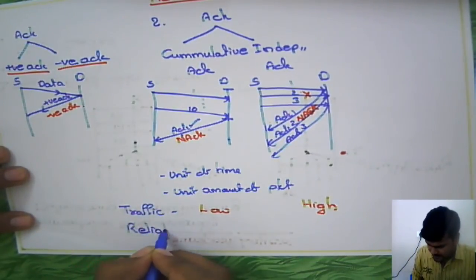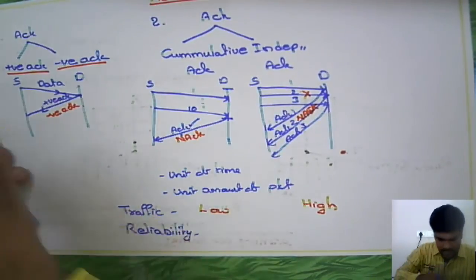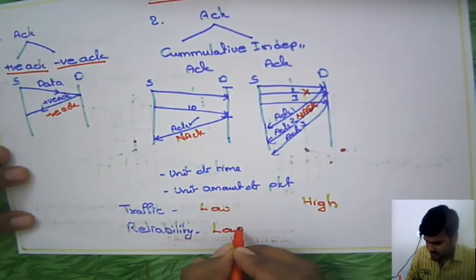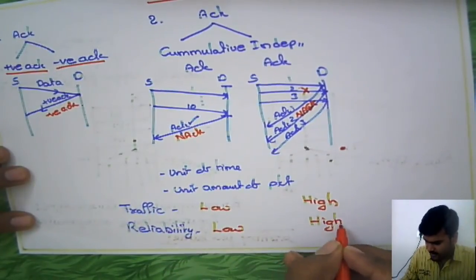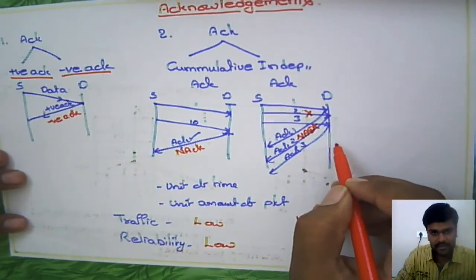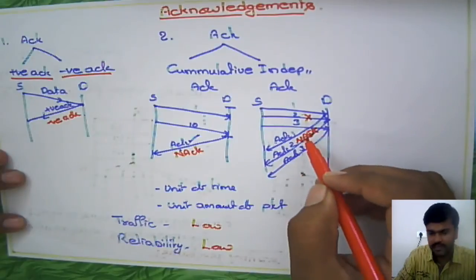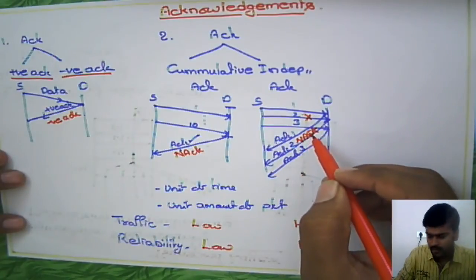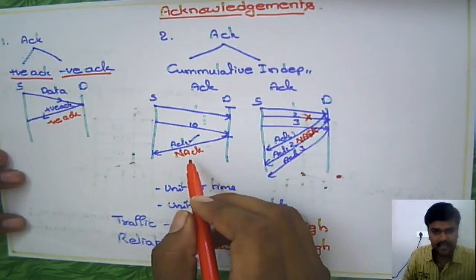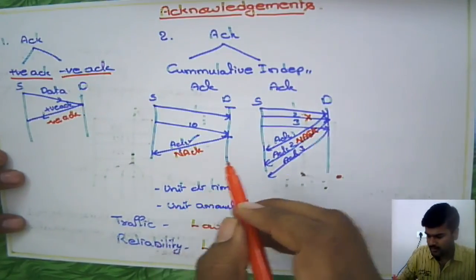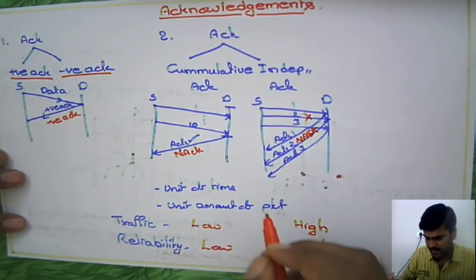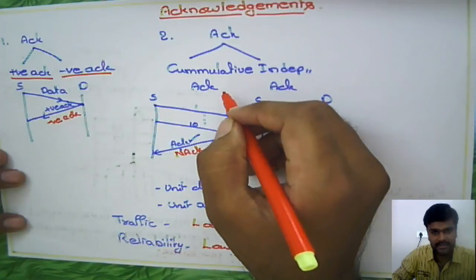In the reliability case, cumulative acknowledgment is obviously low and independent acknowledgment is high. Because with independent acknowledgment you are getting an acknowledgment for each individual packet, so you come to know the status of every packet. But in case of cumulative acknowledgment, that is not possible. So reliability in case of independent acknowledgment is high, and reliability in case of cumulative acknowledgment is low.